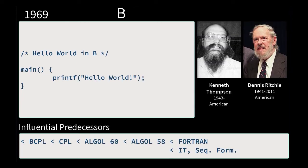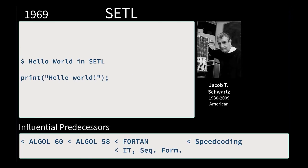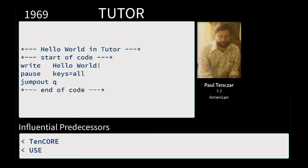Here we see the B language, which includes contributor Dennis Ritchie, who will then be the one who creates the C language — which of course C is like the predecessor of almost all modern languages now.